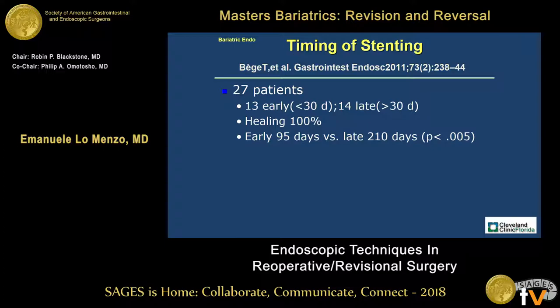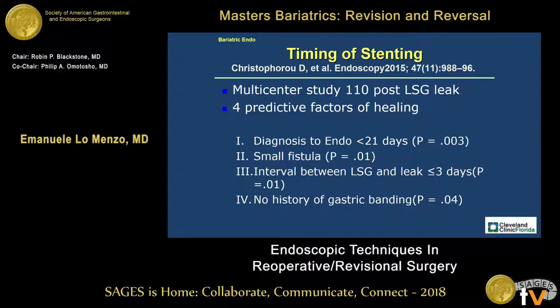In this small study with 27 patients, although each patient obtained healing of the leak, the healing was much faster in patients who had an earlier intervention. In this multicenter study of 110 patients, they identified four factors directly related to healing after an endoscopic procedure: early diagnosis — less than 21 days — the presence of a small fistula, the interval between diagnosis and endoscopic intervention, and finally whether there was a history of a previous band or not, due to scar tissue that would impair closure of the leakage.